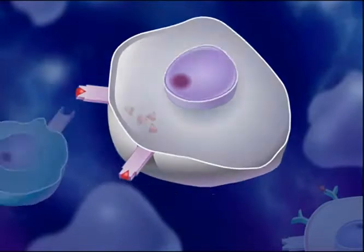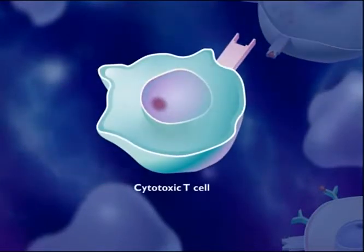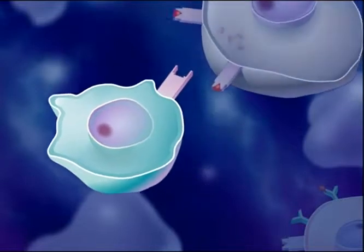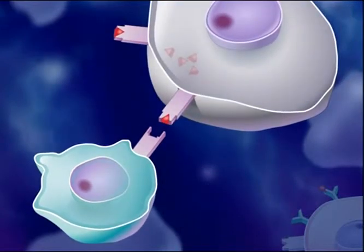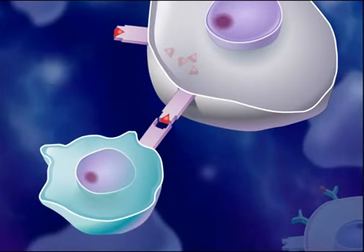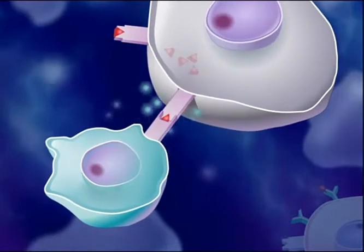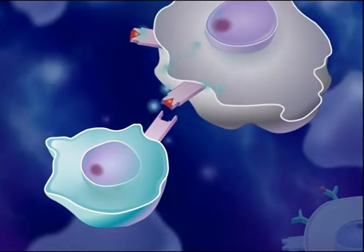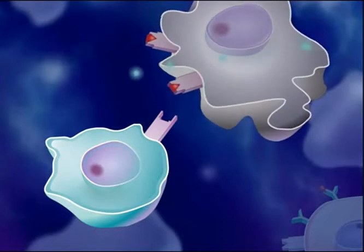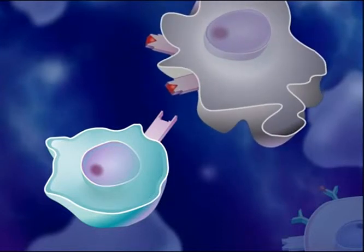The body makes millions of different types of cytotoxic T-cells, and each type is able to recognize a particular antigen. The cytotoxic T-cells that are capable of recognizing the antigen displayed on the surfaces of infected cells bind to the infected cells and produce chemicals that kill the infected cell. Death of the infected cells results in destruction of the pathogen.